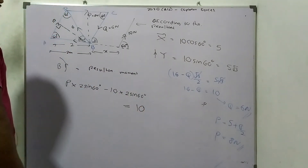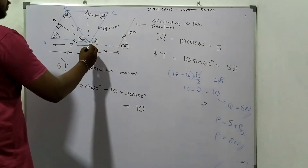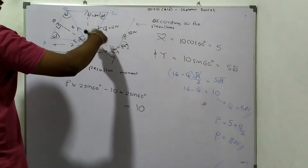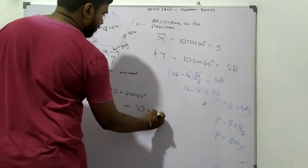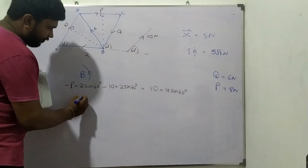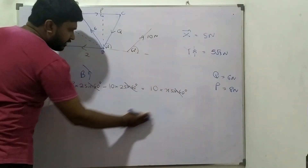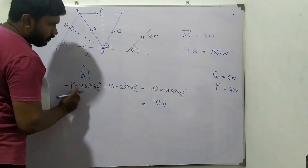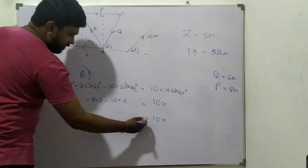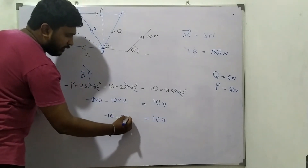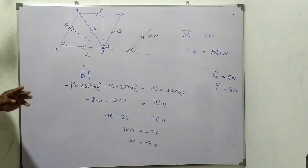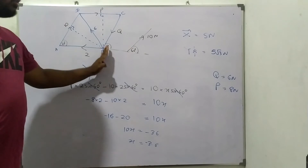The distance is x at 60 degrees — x cos 60, x sin 60. So all sin 60s cancel. We get 10x equals 8 into 2 minus 10 into 2, giving 10x equals 16 minus 20 minus 36, so x becomes minus 3.6. The negative means it is located from B to the left side.